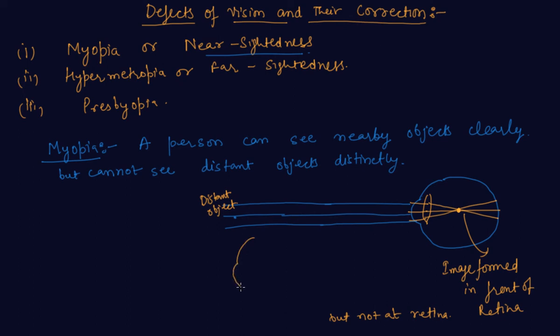Again I am drawing an eye. When light rays enter parallel, a concave lens is used before entering the eye, and this lens diverges the rays.